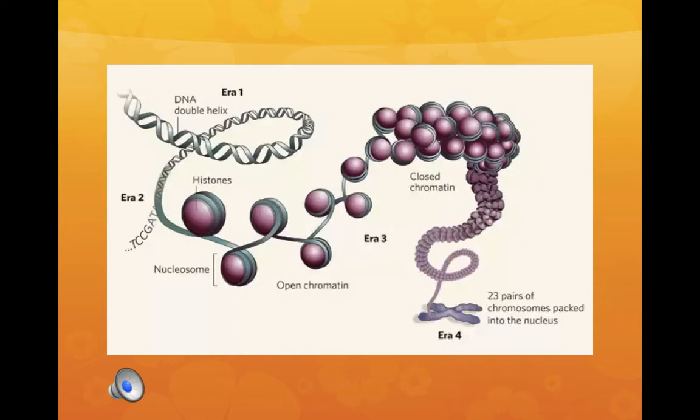The DNA strand winds around a core of eight histone molecules. This core can be imagined like a football around which a long rope is wound with one or two loops, as clearly seen in the diagram. Each such complex is called a nucleosome. The entire chromatin fiber is coiled and supercoiled, something like the coils and supercoils seen in a typical telephone cord.